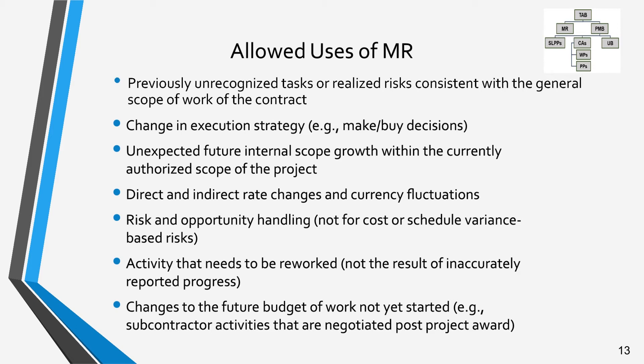MR may be used for changes in execution strategy. An example would be a make or buy decision that is changed from the original baseline plan. This is an example of an assumption change that would be included in the approval documentation. MR may be used for unexpected future internal scope growth within the currently authorized scope of the project. MR may be used for changes in direct or indirect rates, including currency fluctuations.